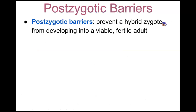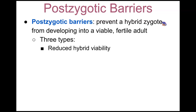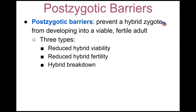Post-zygotic barriers prevent a hybrid zygote from developing into a viable fertile adult. There are three types of post-zygotic barriers: reduced hybrid viability, reduced hybrid fertility, and hybrid breakdown.